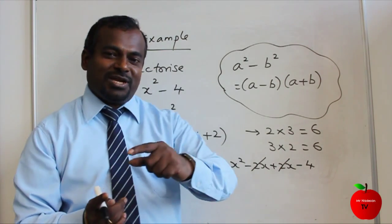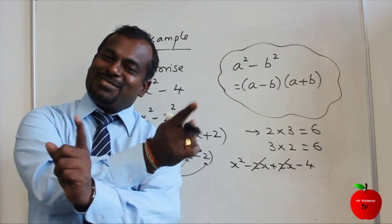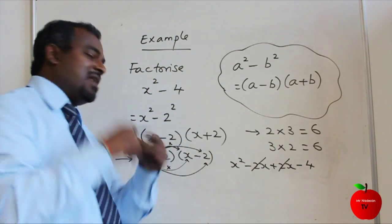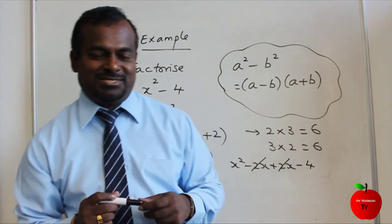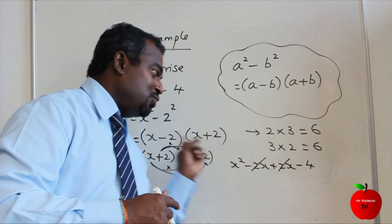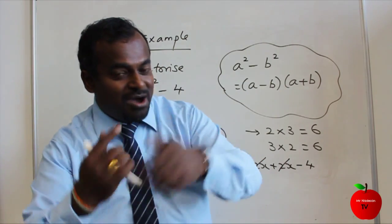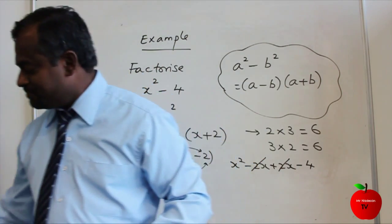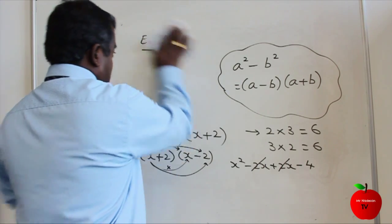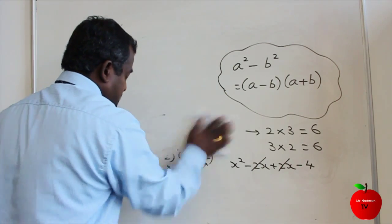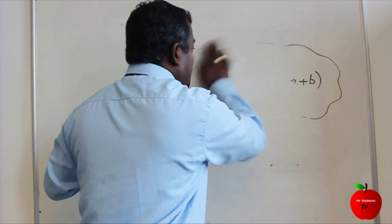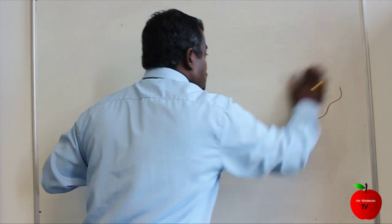Factorising is the opposite of expanding. So a good practice is: when you finish your factorising, double-check your answer by expanding back. Now we're looking at questions to see how they move from C to B grade work.